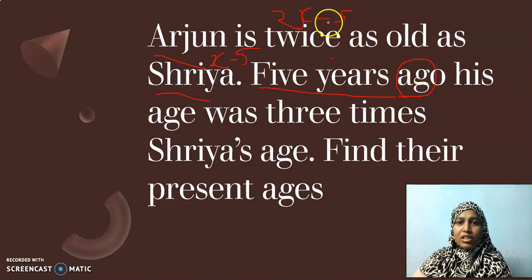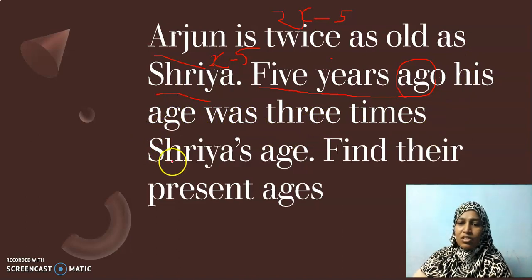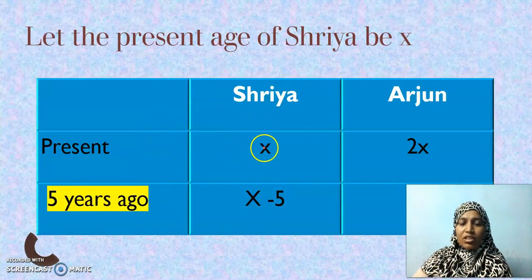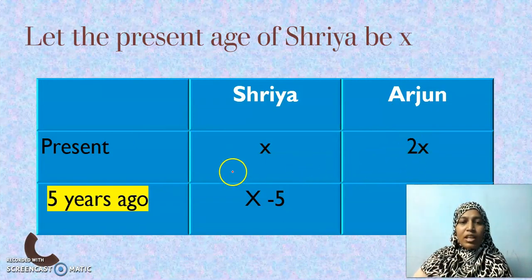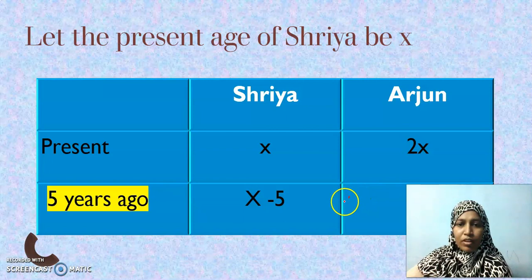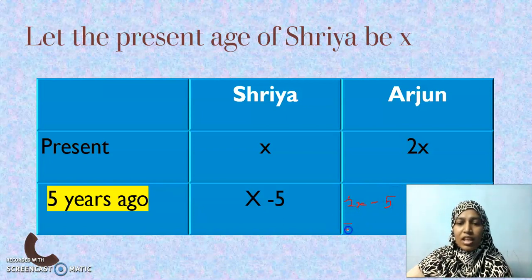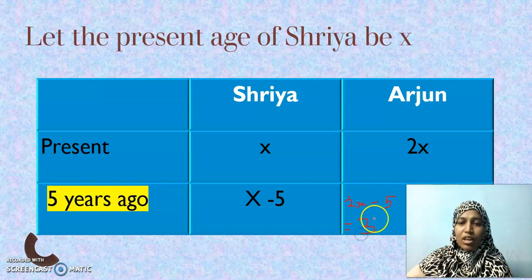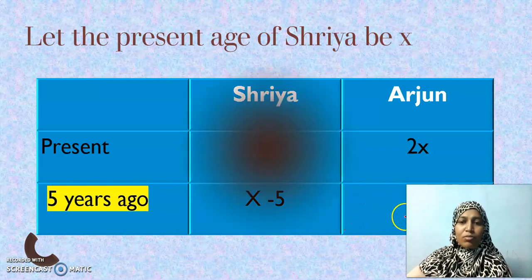See here, five years ago, his age, Arjun. His in the sense, Arjun. Arjun's age was three times Shriya's age. Three times Shriya's age. Now, I will write it in a table format. Present age is X of Shriya. Arjun's age is twice, so 2X. And five years ago, so it is X minus 5. And here, you will have 2X minus 5. And this 2X minus 5 is equal to, they are saying this after five years ago. Five years ago, not after five years ago. Arjun's age is three times, so three into Shriya's age. What is Shriya's age before five years ago? It is X minus 5. So be clear while you write this equation. So I got an equation: 2X minus 5 is equal to three times X minus 5.